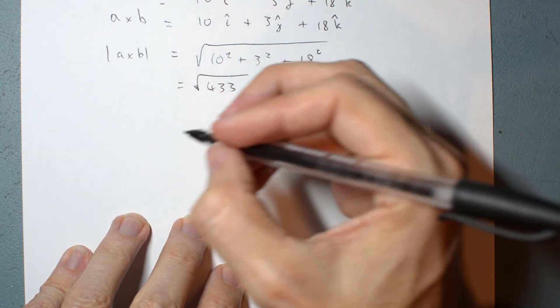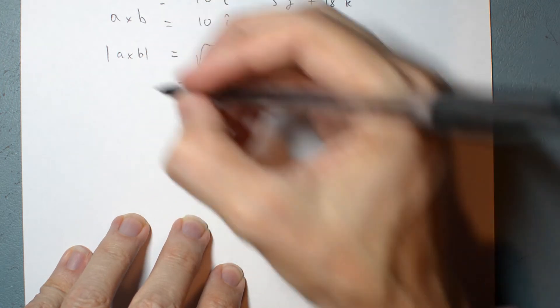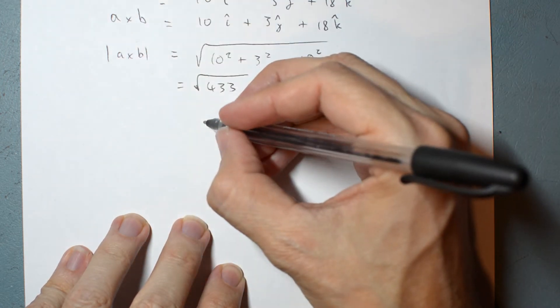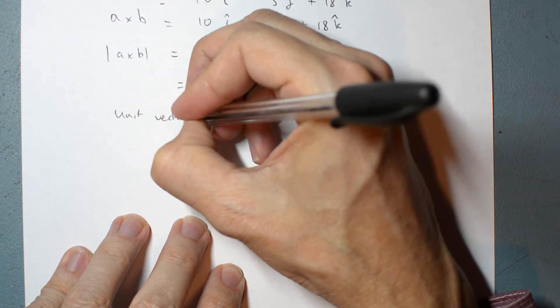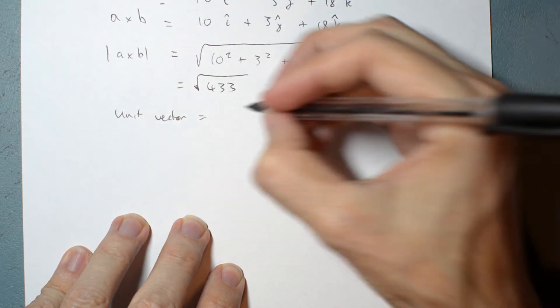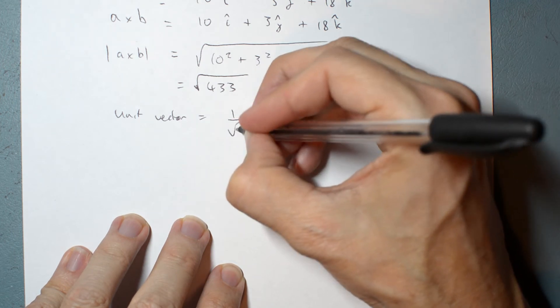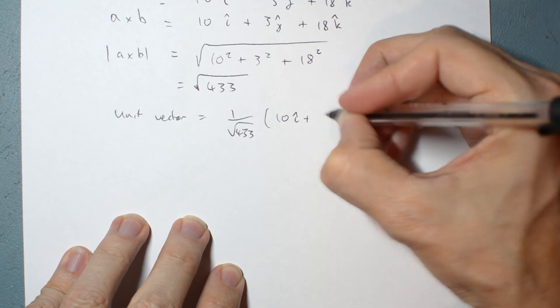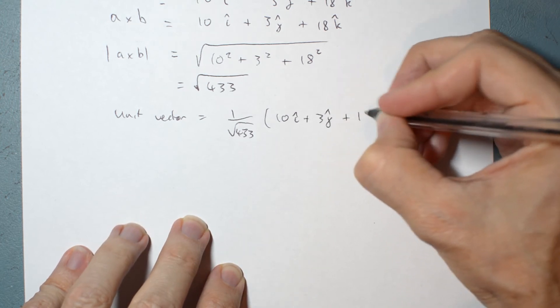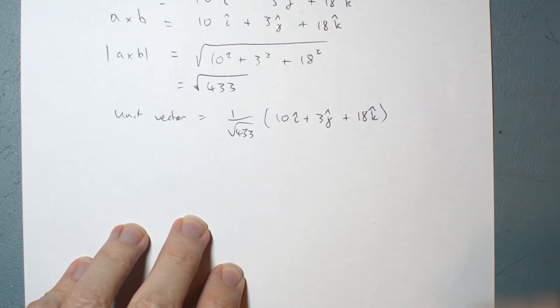So my unit vector is going to be 1 over root 433 times 10 I hat plus 3 J hat plus 18 K hat.